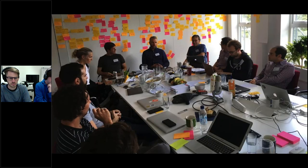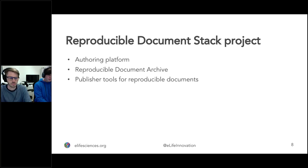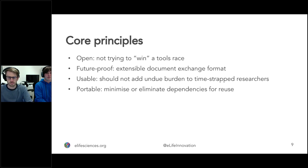We've done work to map out what this process might be, identifying tools, gaps, and concerns with many stakeholders in a workshop last June. The project that started in September is producing an authoring platform, a format for the reproducible document — which we're calling the Reproducible Document Archive — and tools for publishers to actually publish these documents. We're innovating openly, trying to make anything produced future-proof, easy for researchers to use, and easy for publishers to adopt, with minimized dependencies.